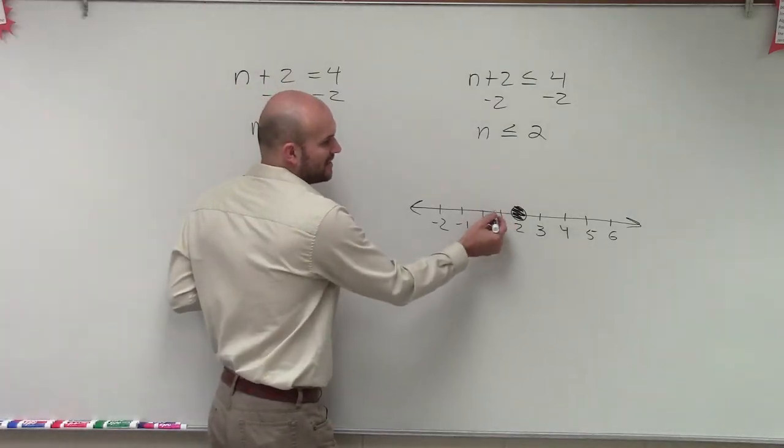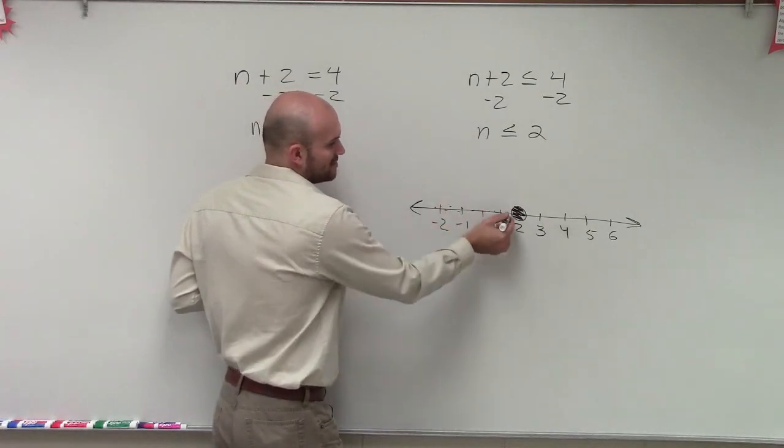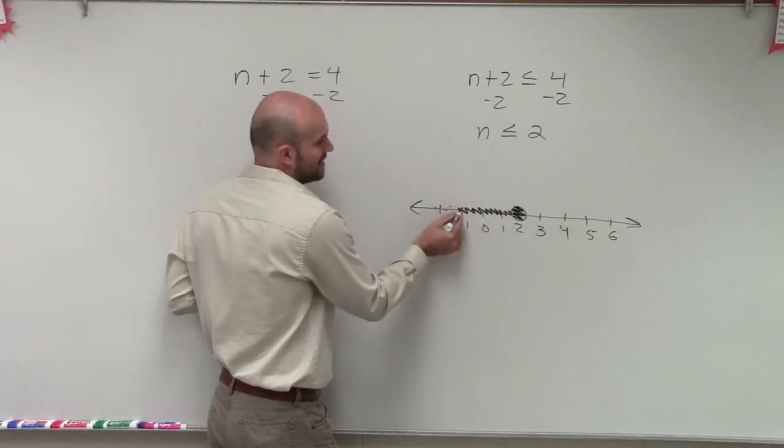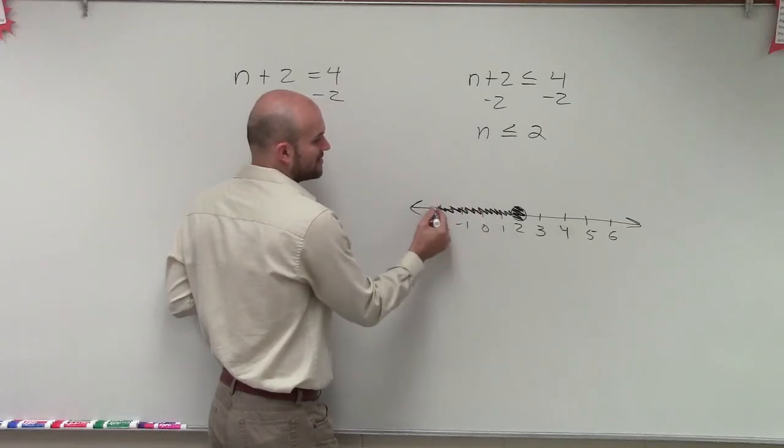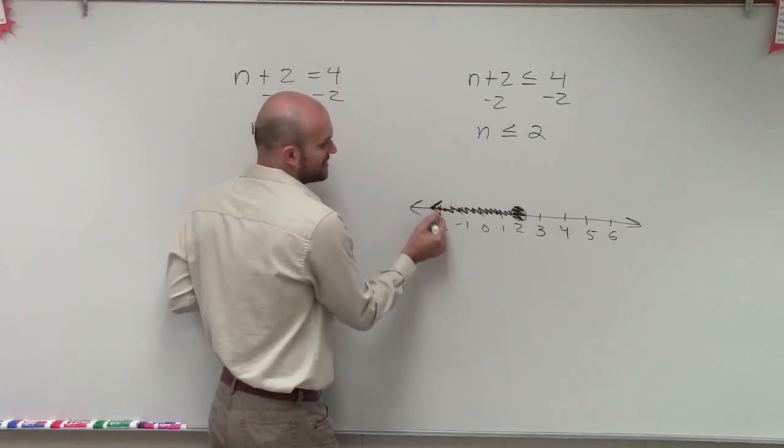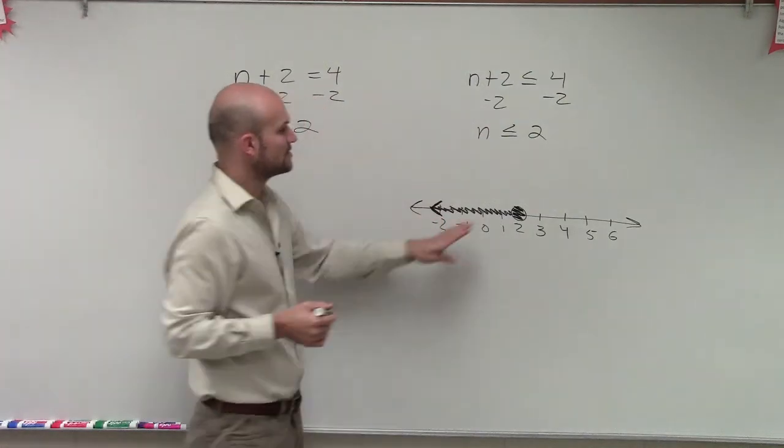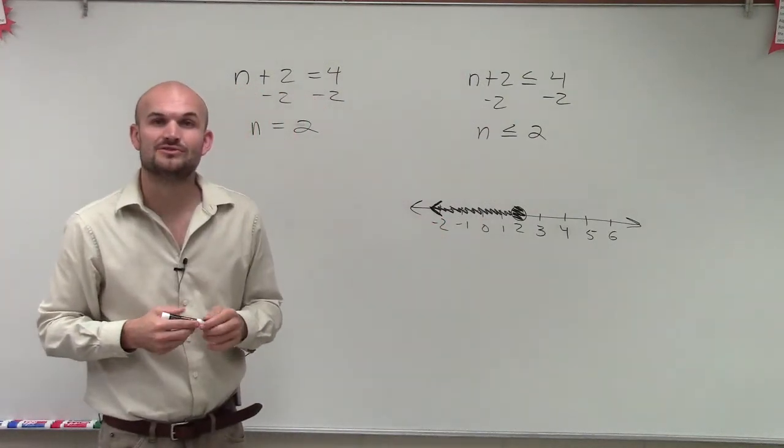So rather than dotting in all these possible solutions, we're just going to have a shaded line and say, you know what, as long as the numbers are going to the left, it's going to make my solution true. So therefore, that will be the graph of our solution. Thanks.